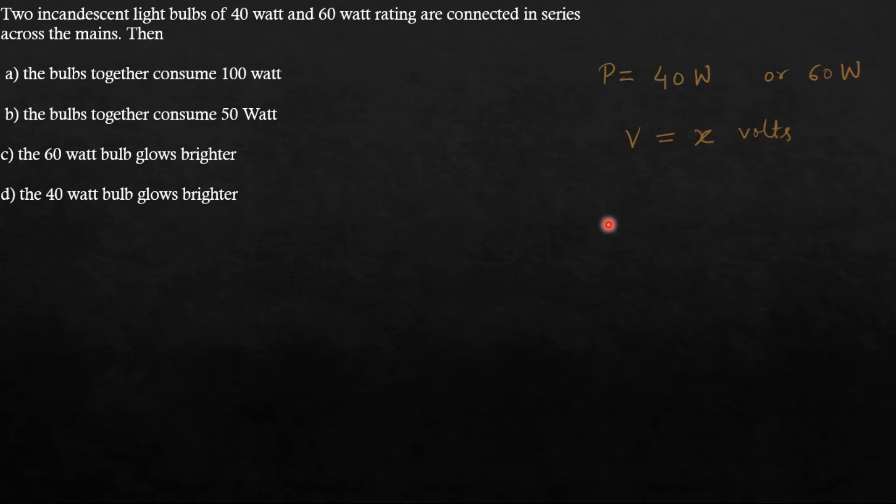Now the power in any resistance is given by V square by R. So from this formula, we can calculate the resistance of any bulb, that is V square by P. So the resistance of 40 Watt bulb will be X square by 40. X is the voltage and 40 is the power. So resistance of 40 Watt bulb is X square by 40.